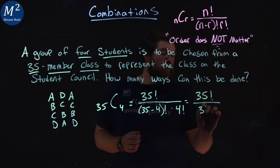Now, if you remember from before, we can simplify this out a little bit. 35 factorial over 35 minus 4, which is 31 factorial, times a 4 factorial.